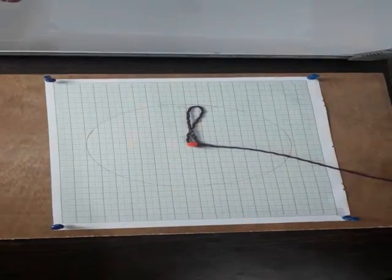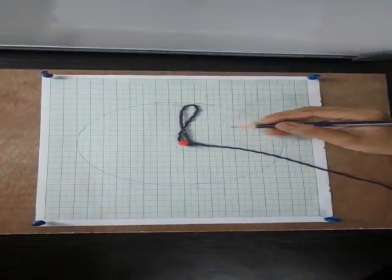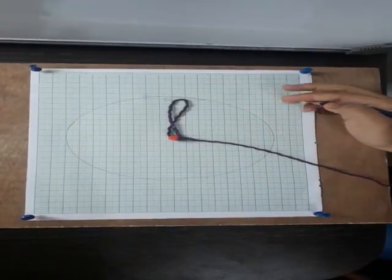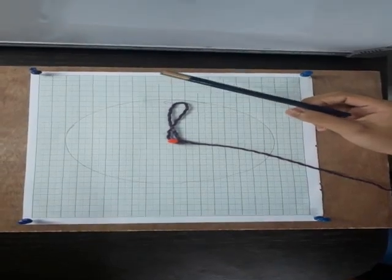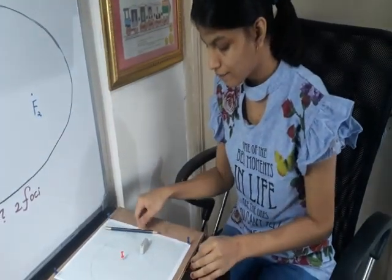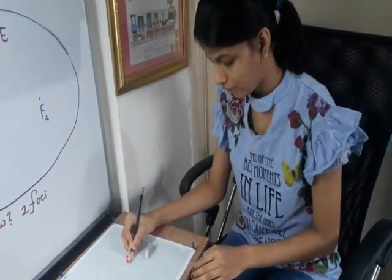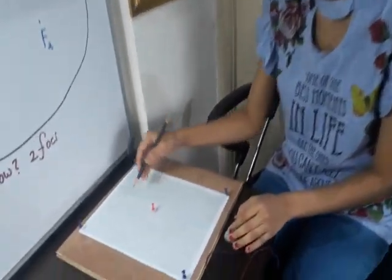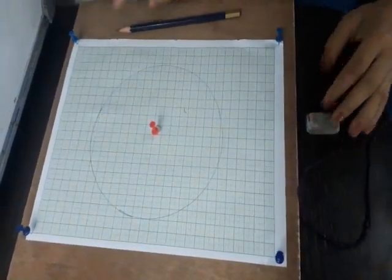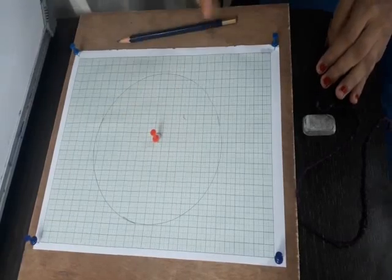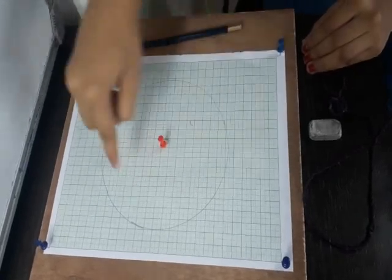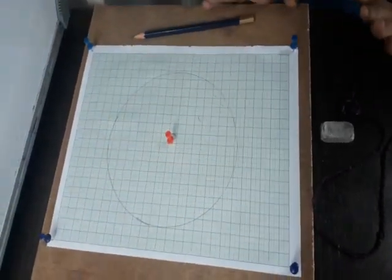This is our circle completed. I think that you may also do this activity at your home — it is very easy using the material available at your home. Now let us remove the string and name this point as point C. Here the full circle is visible to you. From this we can conclude that the circle has only one center, and a circle can be drawn from only one point.